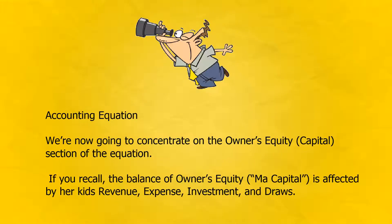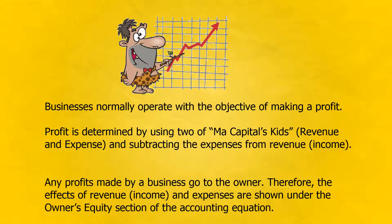We're now going to concentrate on the owner's equity capital section of the equation. The balance of owner's equity — ma capital — is affected by her kids: revenue, expense, investment, and draws. Businesses normally operate with the objective of making a profit. Profit is determined by using two of ma capital's kids — revenue and expense — and subtracting the expenses from revenue. Any profits made by a business go to the owner. Therefore, the effects of revenue and expenses are shown under the owner's equity section of the accounting equation.